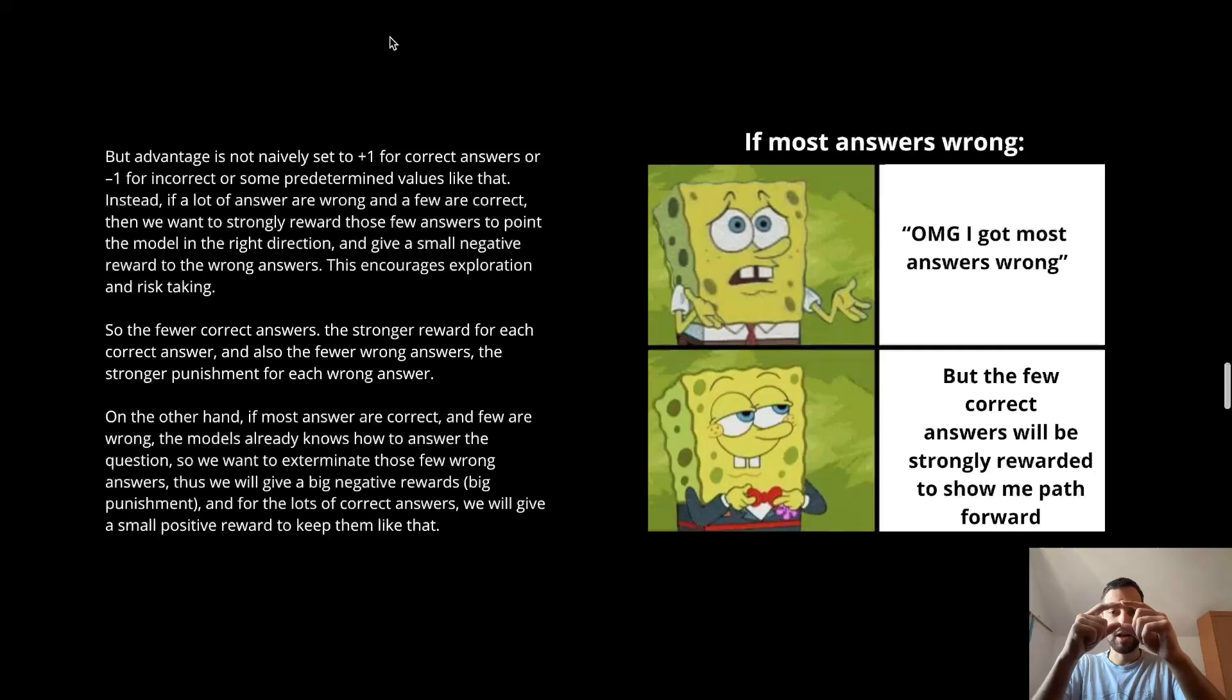Remember we have a question and we tried answering that question multiple times. So if there is a lot of wrong answers and just a few correct answers then we want to strongly reward those few correct answers to show the path to the AI and we want to just slightly punish the wrong answers. So this is gonna encourage exploration. So AI will not be afraid to make mistakes and it will chase these correct answers. Think of it as strongly reinforcing rare correct paths that AI found.